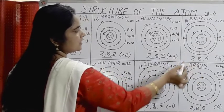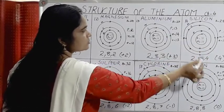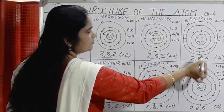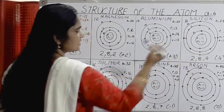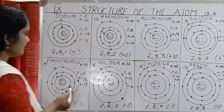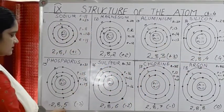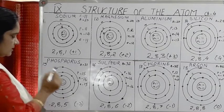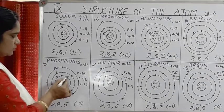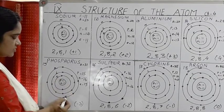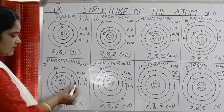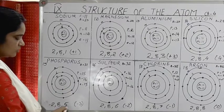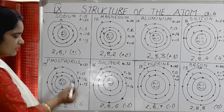Silicon has electronic configuration 2, 8, 4. Phosphorus has atomic number 15, with 2 electrons in the first shell, 8 in the second, and 5 in the last shell. From silicon onwards, the outermost shell is getting increasingly filled — 4 is half of 8.